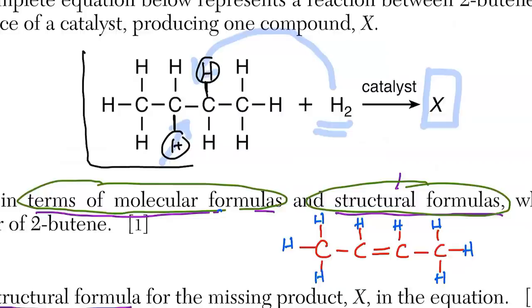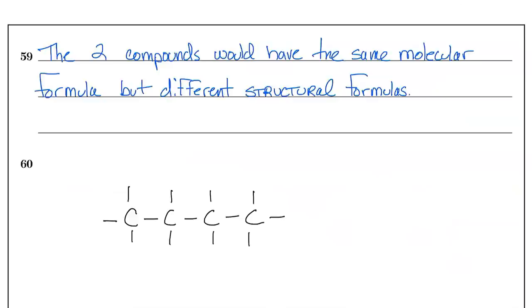The product is butane — four carbons with single bonds. They could ask you to name it: four carbons with single bonds is 'ane.' You can draw it with dashes representing where the H's go, which is totally acceptable. Remember every carbon makes four bonds. If you draw the H's, put all of them in. The answer is the structural formula for butane.